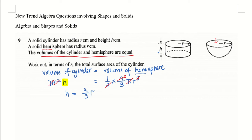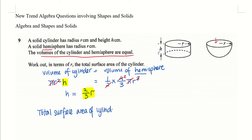The moment I know this, when I see h in future, I'm going to replace it by 2/3 r. Now I'm going to answer the question. The question asks me to find the total surface area of the cylinder. So what is the formula for total surface area of a cylinder?